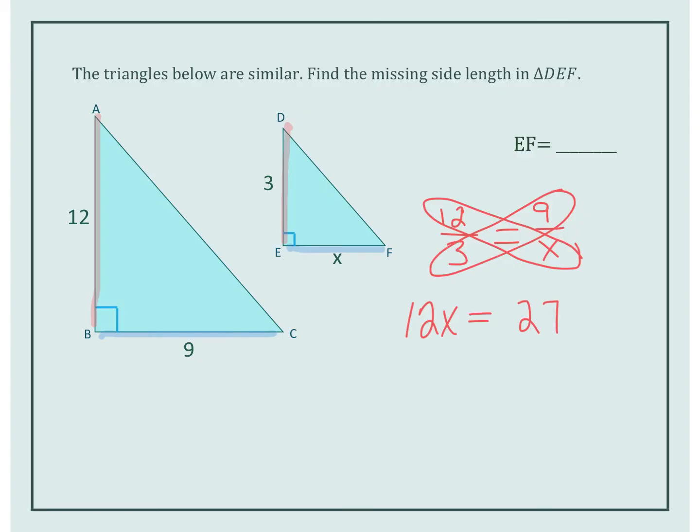Now we want to get X by itself. So we do the inverse operation. Right now you're multiplying these two things because they're next to each other. So in order to move that 12 to the other side and get the 1X, you divide by 12 on both sides.